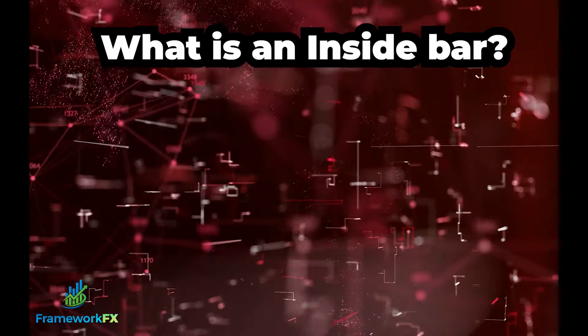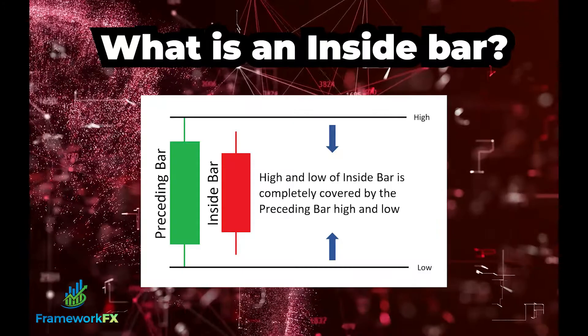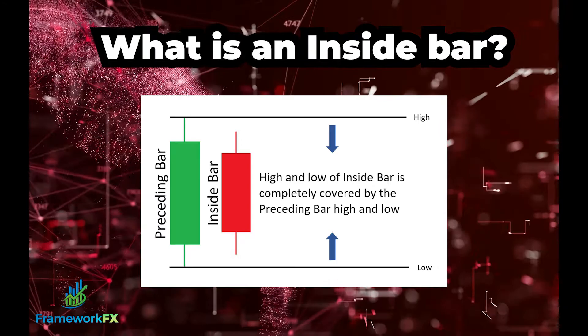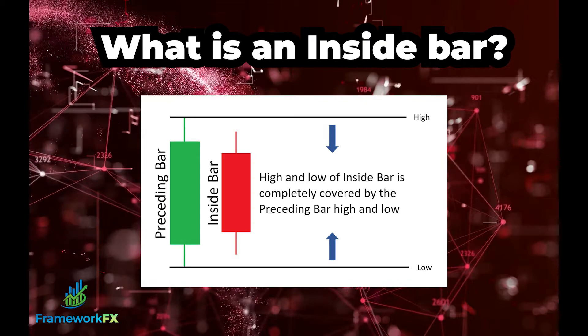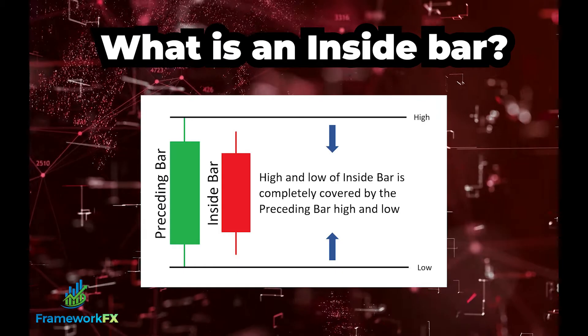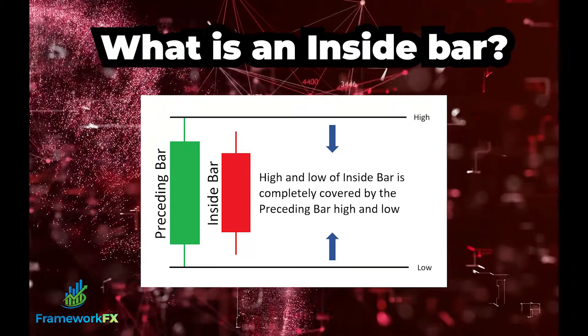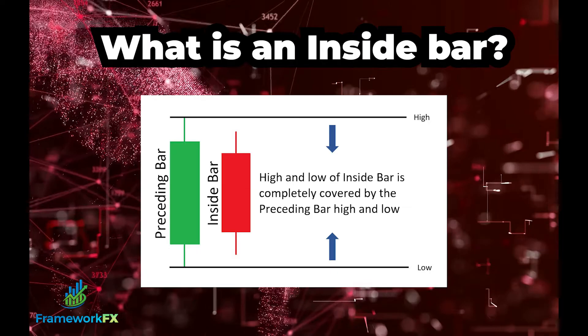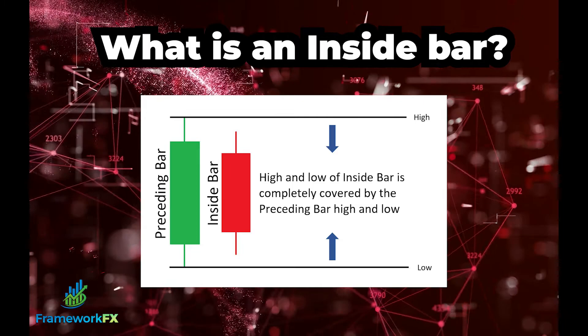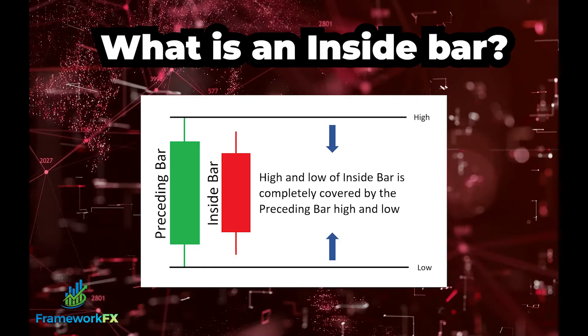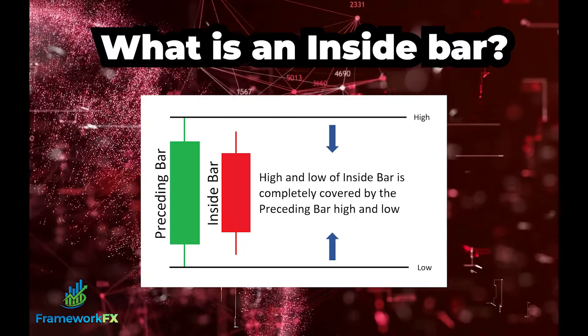So what is an inside bar? Simply put, an inside bar is when one candle is unable to break out of the high or low of the previous candle, as you can see from this example here. This is a really great technical indicator because what it's saying to the trader is that price is in a period of consolidation, meaning that it can't decide whether it wants to go up or down. It can also indicate that, say we were in an uptrend, buyers are now losing momentum, losing control, and we might be getting ready for a reversal, or we might just be gathering up more buyers to continue the momentum.